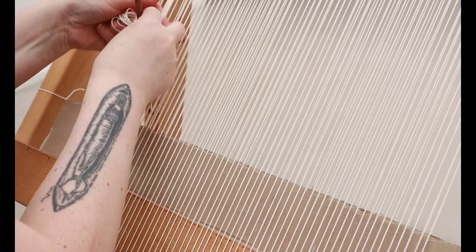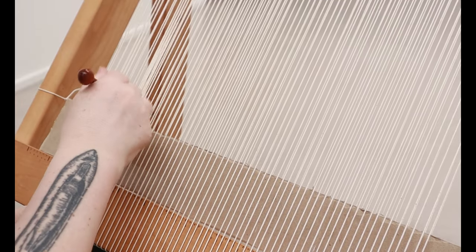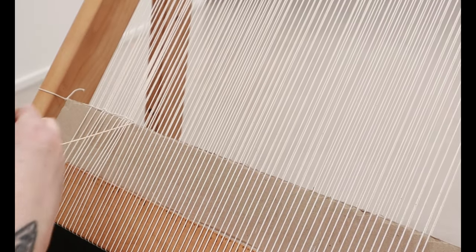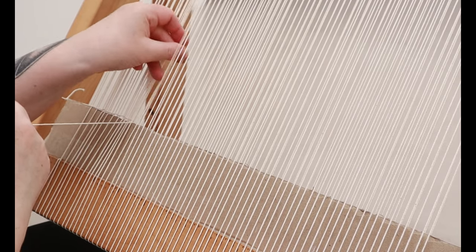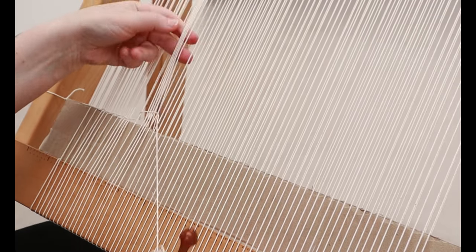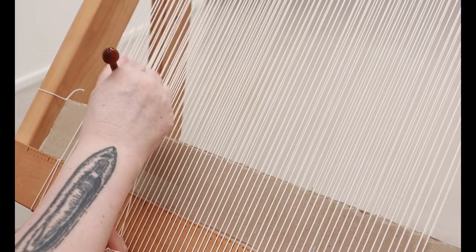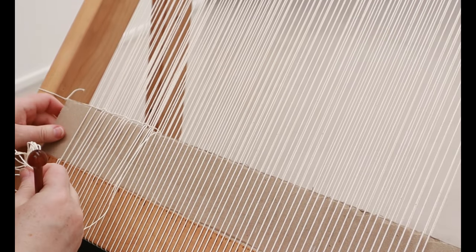I start the tapestry the same way as most tapestry weavers, by using some extra warp to space out the warp threads on the loom. The first pass is always the messiest, where you're just going under and over, getting them roughly accurate.